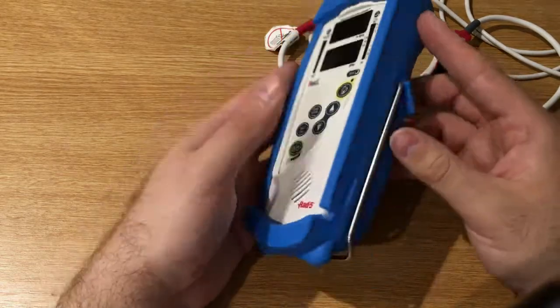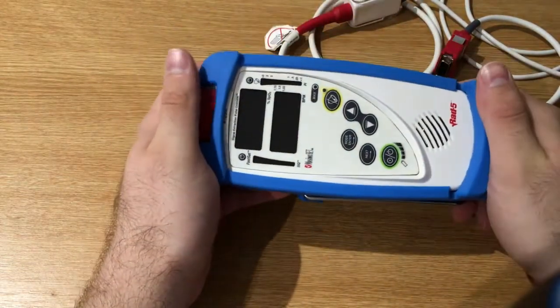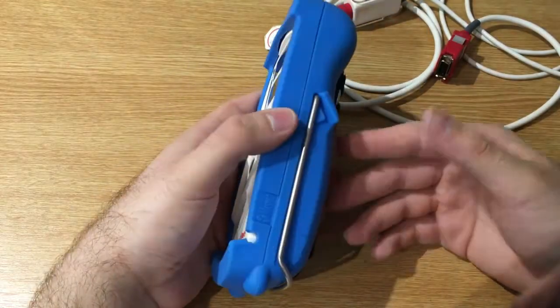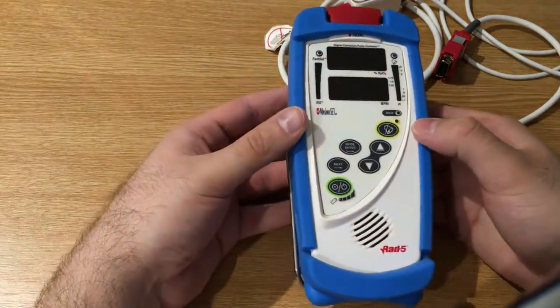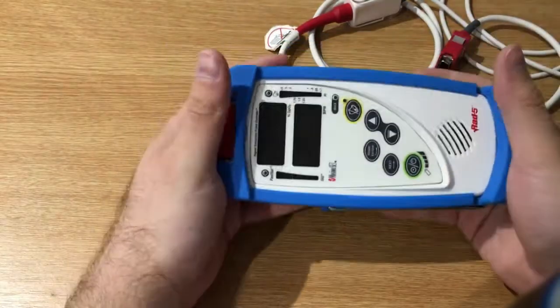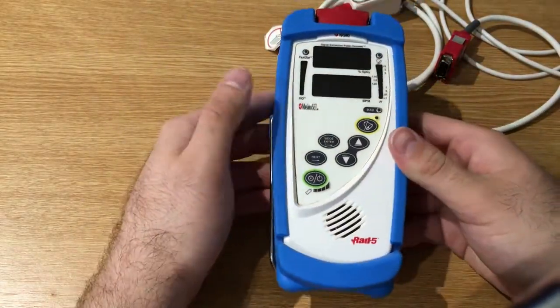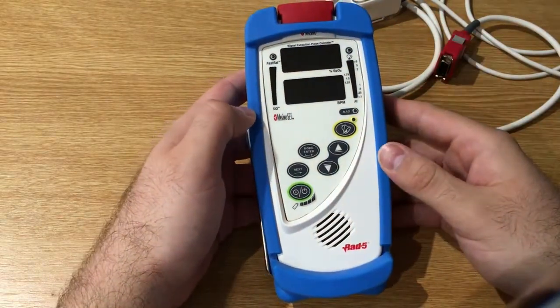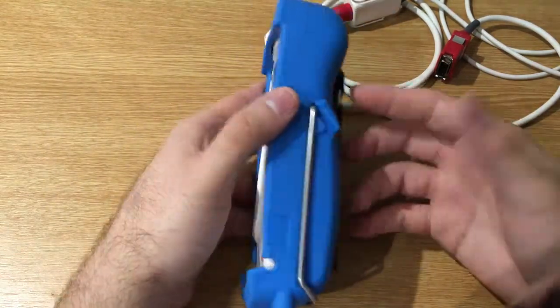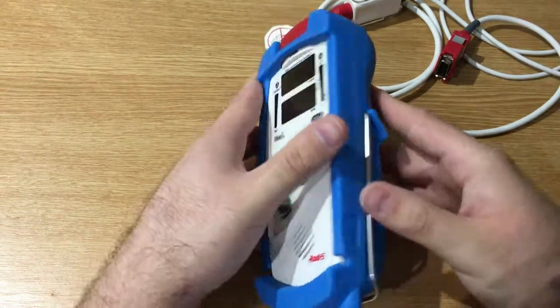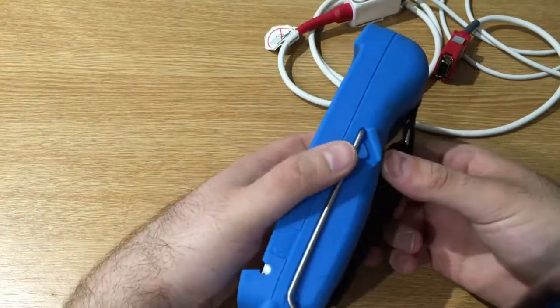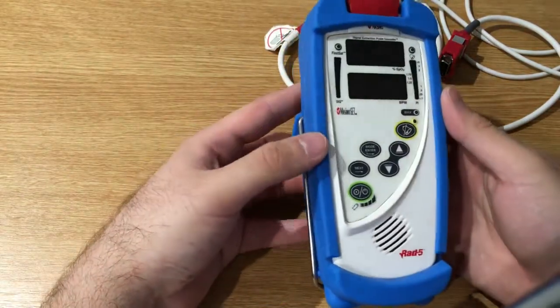I think that in a field or a normal world condition, this one is going to survive definitely better than the Radical 7. This is pretty rugged, and compared to Radical 7, I think that on this one we have pretty much everything that we need in a normal condition, and is less expensive than the Radical 7 for sure. So I think that for general purposes this is a great choice. This is a very good pulse oximeter, and it's quite good-looking as well.